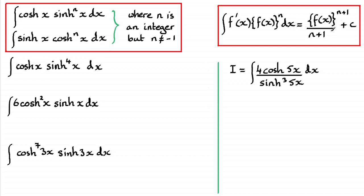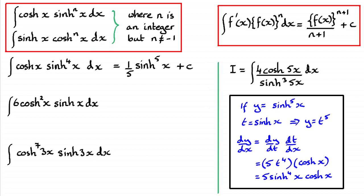So if you've got ∫cosh(x)·sinh⁴(x)dx, you can see that if we let f(x) = sinh(x) and n = 4, differentiating sinh(x) gives cosh(x), so this definitely falls into this pattern. Following this method, it's going to be f(x) = sinh(x) raised to the power n+1, so raised to the power 5 and divided by 5. You get the answer: (1/5)sinh⁵(x) + c.